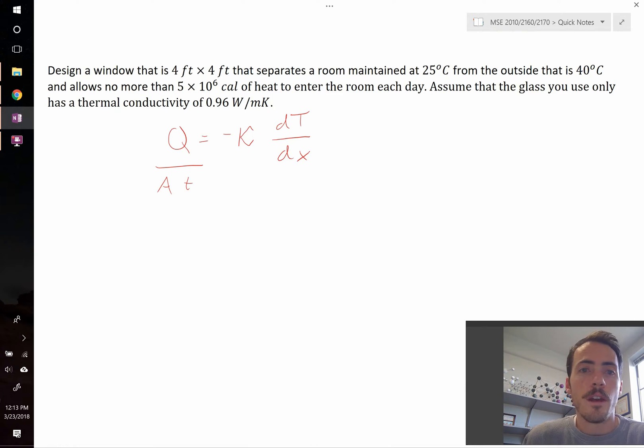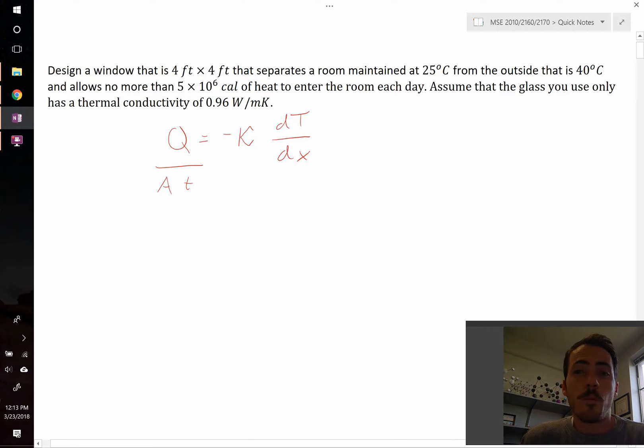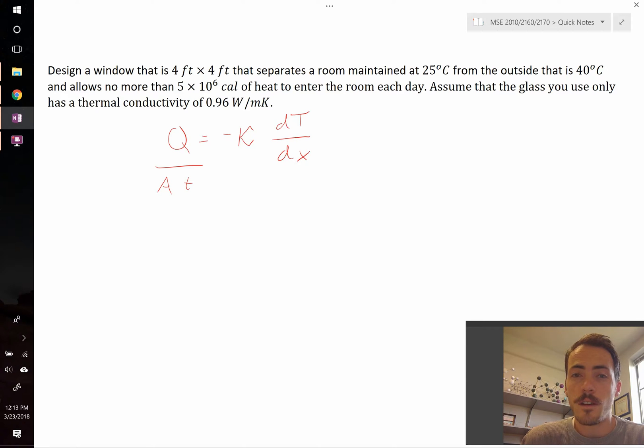So with that said, how do we go about solving this question? Well we're told to design a window, but we're already told the dimensions in terms of area. So what can we actually change? We're not changing the temperature on either side. The only thing that we can change is the thickness or the choice of material. In this case we're given a choice of material, so the only thing we can change is the thickness, dx.